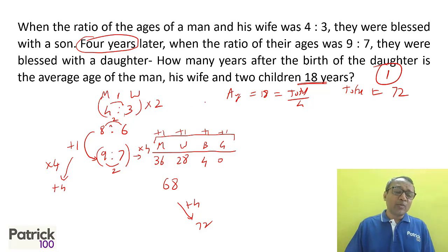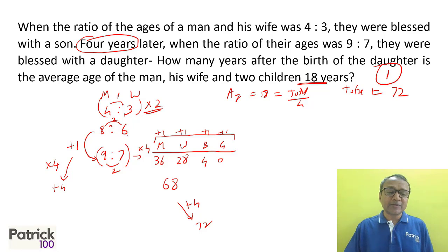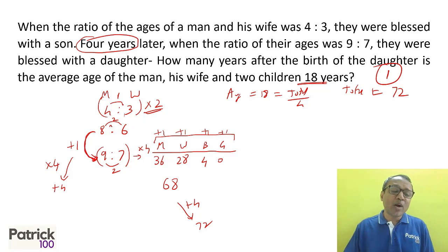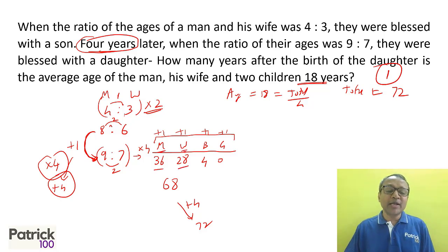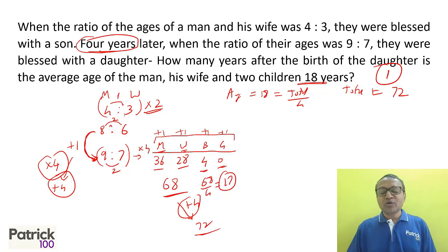To recap: the difference in the man and wife ratio (4:3) is 1, and in 9:7 is 2. Since the age difference must remain constant, multiply the first ratio by 2 to get 8:6. To go from 8 to 9 needs +1, but it's 4 years, so multiply by 4. Current ages: man = 36, wife = 28, boy = 4, girl = 0. Total = 68; required total = 72. Current average = 17, so one more year gives average = 18. Answer: 1 year.